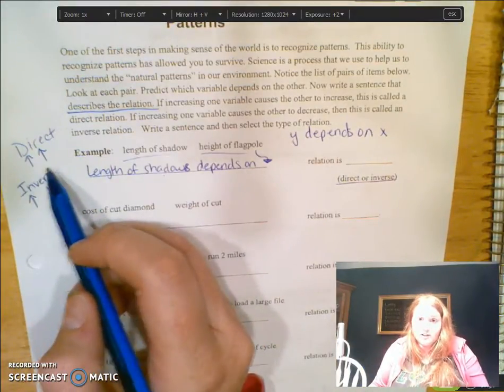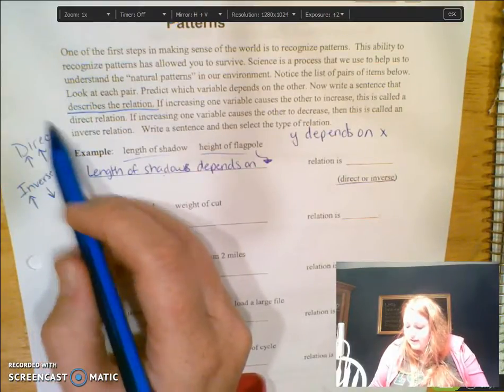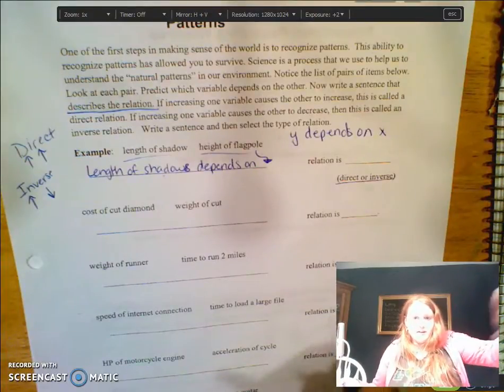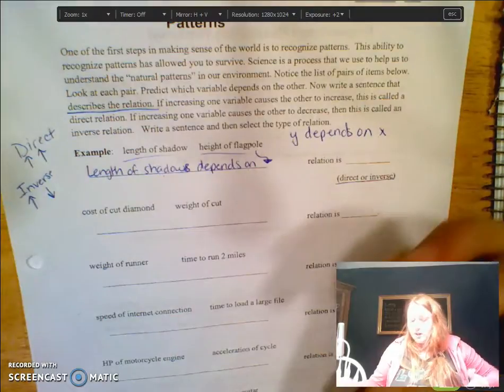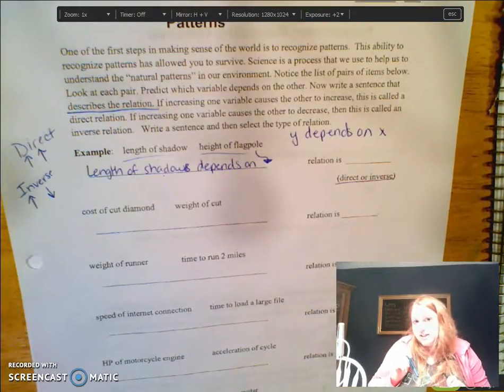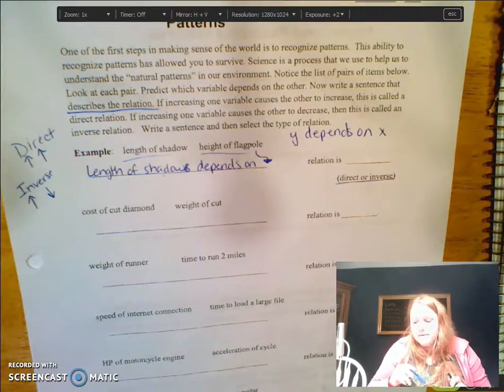And that would be the case here. The higher the flagpole, the larger the shadow—assuming that the shadow is measured at the same time of day and under the same weather conditions for every flagpole that we are measuring.